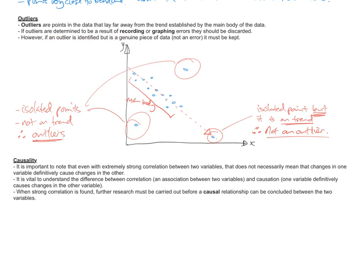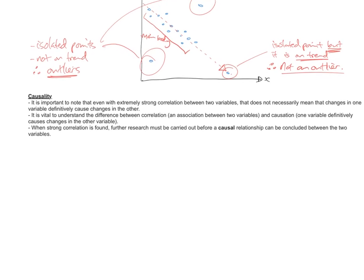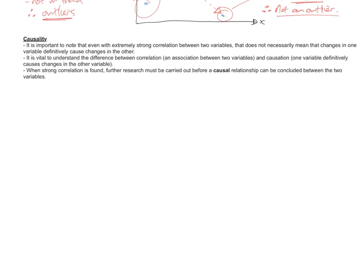Now if outliers are determined to be a result of a recording or graphing error, so you know they came from mistake, they should be ignored, discarded. So these would be crossed out. And your actual trend line with all these points, the strength of that correlation would be stronger because you're ignoring these which came from mistakes. But if an outlier is identified to be genuine, it wasn't due to a mistake, you can't find the mistake that was made, it wasn't an error, then you have to keep it because it's genuine. It's a legit piece of data. So you'll have to explain that in another way, not just ignore.